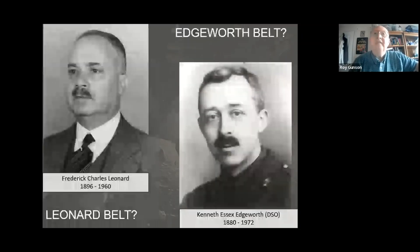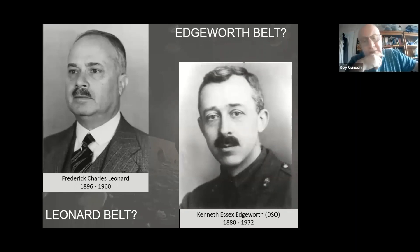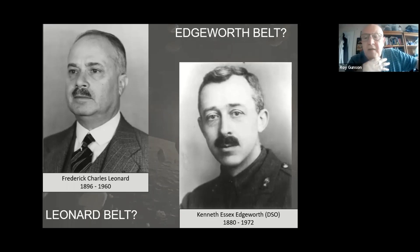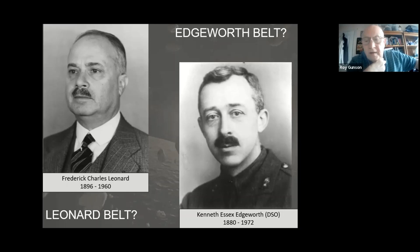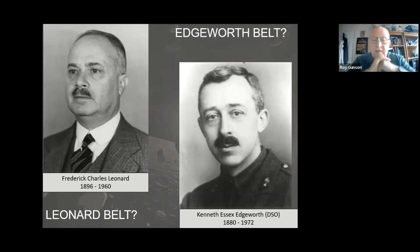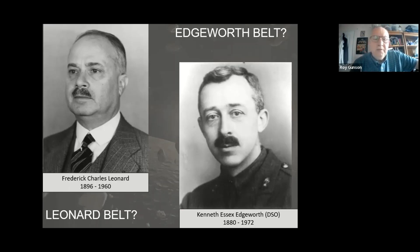The belt could have been called the Leonard Belt, or indeed it is sometimes called the Edgeworth–Kuiper Belt. Fred Charles Leonard of UCLA mentioned in 1930 that Pluto might be the first of a series of ultra-Neptunian bodies waiting to be detected. Edgeworth wrote a paper in 1943 in the BAA journal suggesting a vast reservoir of cometary material just beyond the orbit of Neptune — seven years before Oort's suggestion about the Oort Cloud and eight years before Kuiper's paper.